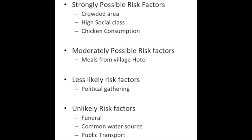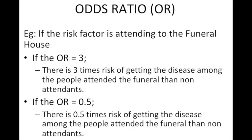For a more precise assessment, we can calculate odds ratios. If the risk factor is attending the funeral and the odds ratio is 3, there is three times the risk of getting the disease among attendees versus non-attendees. If the odds ratio is 0.5, it means half the risk, and in some cases it may indicate a protective factor.